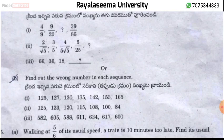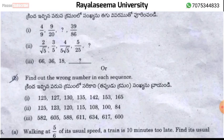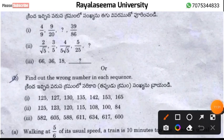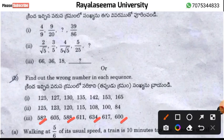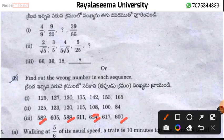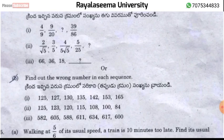Third wrong-number series: 582, 605, 588, 611, 634, 617, 600. The pattern alternates adding and subtracting. Checking: 588 + 6 = 594, 594 + 6 = 600. So 634 is the wrong number in this series.